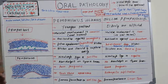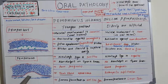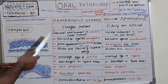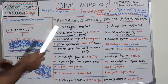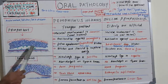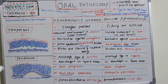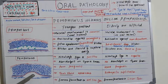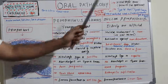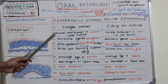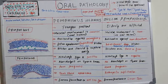In pemphigus, mucosal involvement is very common and oral lesions are frequent. But in pemphigoid, mucosal involvement is very rare because it is a deeper, sub-epidermal separation. Since pemphigus involves intra-epidermal blister formation it more readily affects mucosa, whereas pemphigoid being sub-epidermal makes mucosal involvement rare.